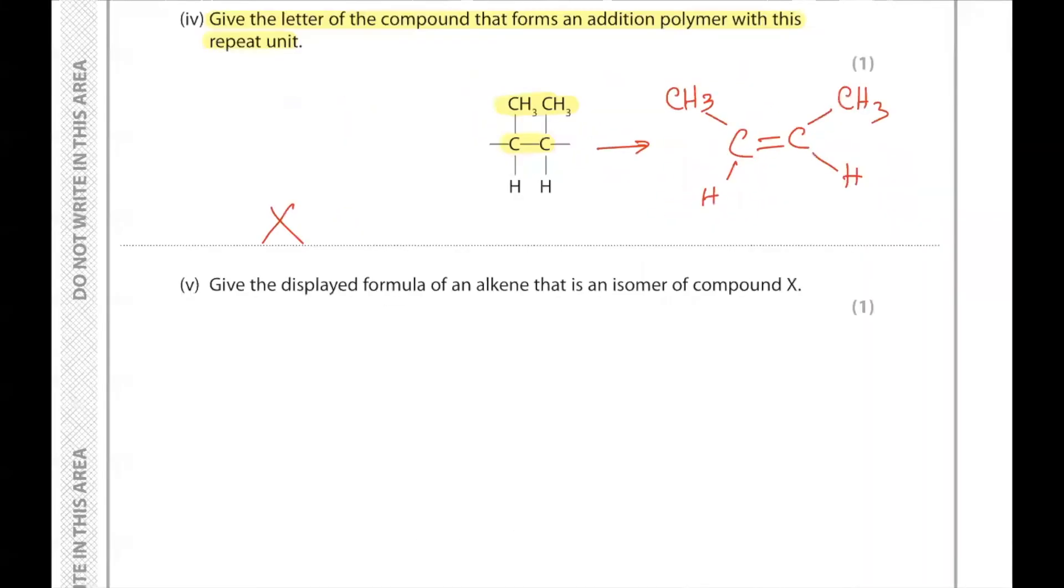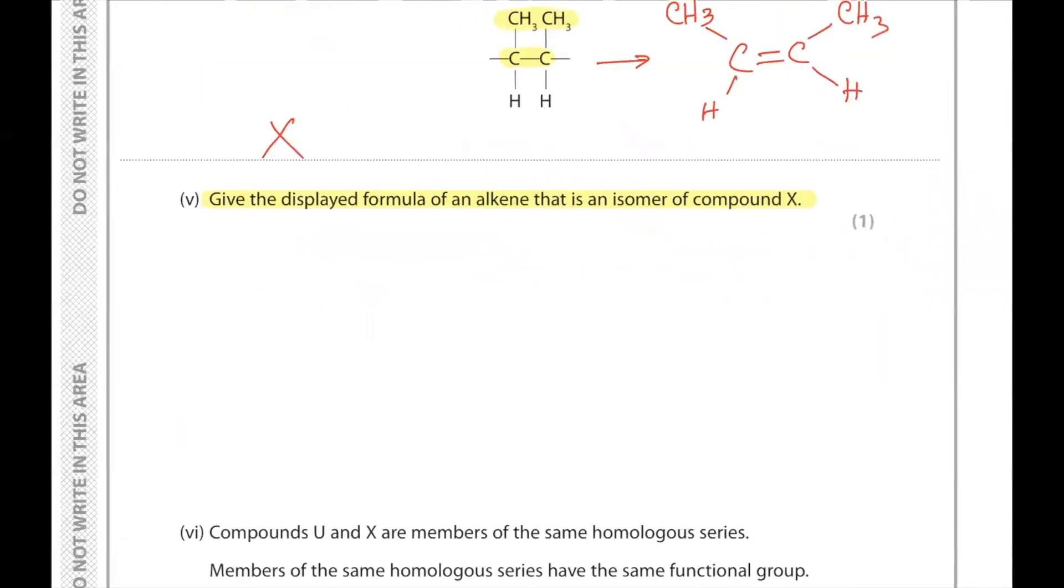Give the displayed formula of an alkene that is an isomer of compound X. An alkene which is isomer of compound X will be four carbons in a row, but instead of putting the carbon-carbon double bond in the middle, we'll put it in the left. This gives us but-1-ene.